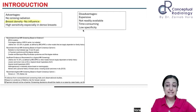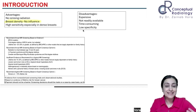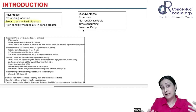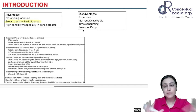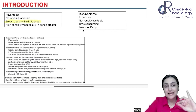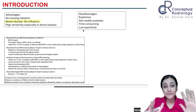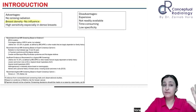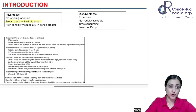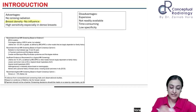So the advantages of breast MRI: no ionizing radiation, and breast density has no influence. That's why we use it for screening in younger patients. In one line: breast MRI is used for screening in younger high-risk females and as a problem-solving tool for diagnosis.